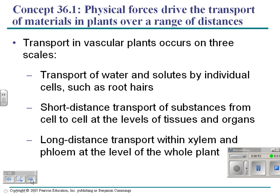There are basically three scales that transport occurs on: individual cells transport things from one cell to another; short distance transport between cells; and then long distance using vessels — xylem and phloem — two terms that we talked about last time.